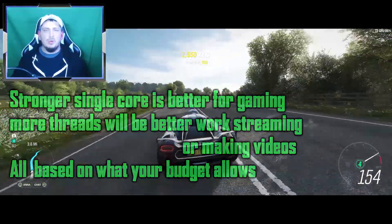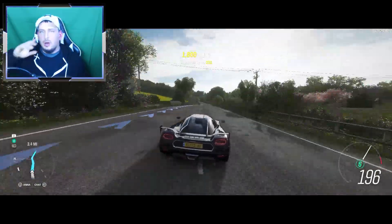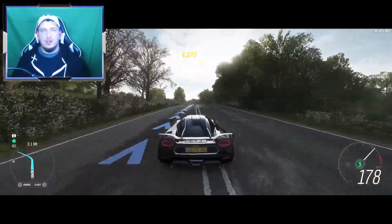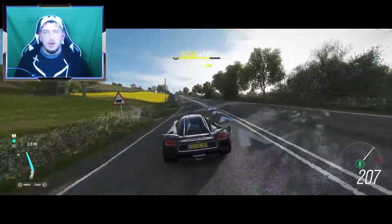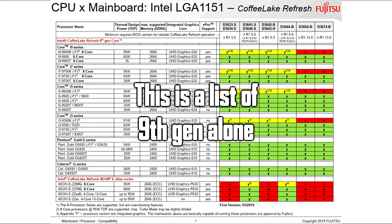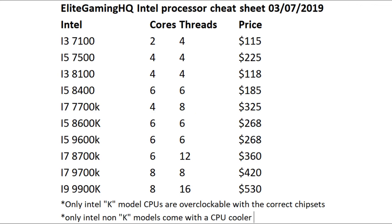I'm going to put up a little cheat sheet showing a bunch of different processors - Intel and AMD - their cores, their thread count, and market value, because that's one thing you have to keep in mind. This is just a rough example of some of the more common ones from the past three years of Intel processors. By no means is this all of them, but a lot of the desktop CPUs you're going to find in systems you buy secondhand or new are going to generally be around these.